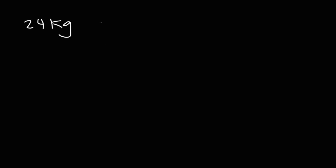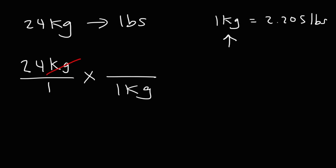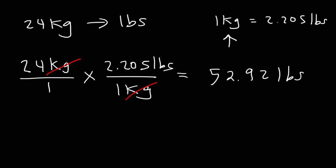Now let's try another example. Go ahead and convert 24 kilograms into pounds. Feel free to pause the video if you wish. So we start with 24 kilograms. For the next fraction, we use the same conversion factor — 1 kilogram on the bottom so the units cancel, and 2.205 pounds on top. So it's 24 times 2.205, and the answer is 52.92 pounds.